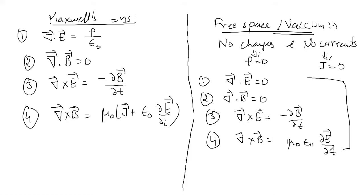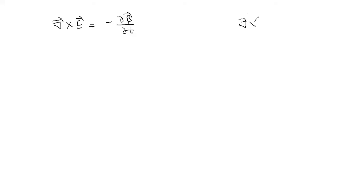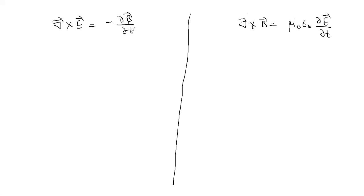Labeling the free-space equations one through four, we take the curl of equation three: del cross del cross E equals del cross of minus partial B by partial t. Since del depends only on space and time is independent, we can take partial by partial t outside: minus partial by partial t of del cross B. Now substitute del cross B from equation four: del cross B equals mu naught epsilon naught partial E by partial t.